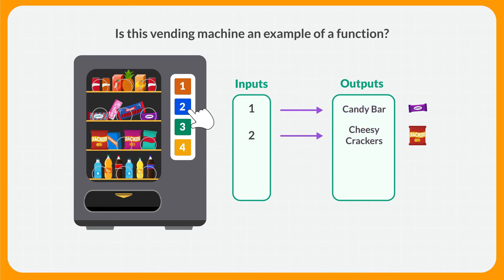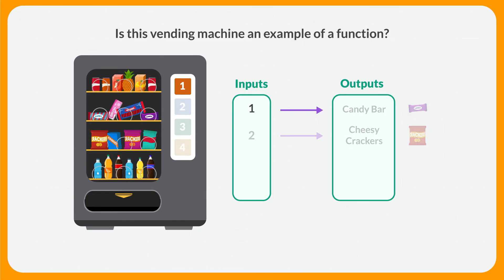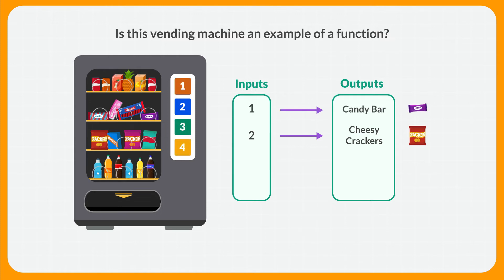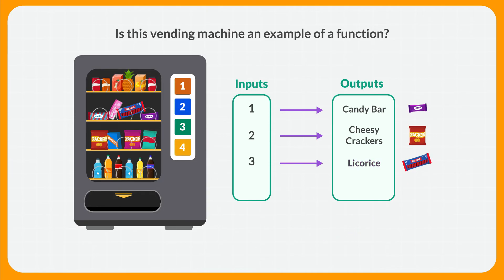Is this vending machine an example of a function? This is an example of a function, because so far every input has exactly one output. If I press button number one, I'll only get a candy bar every single time. And if I press button number two, the only thing that will come out is cheesy crackers. When the third button is pressed, we get red licorice. Each input has exactly one output, so this is still an example of a function.